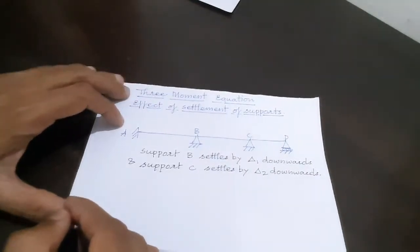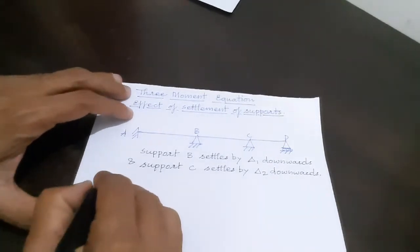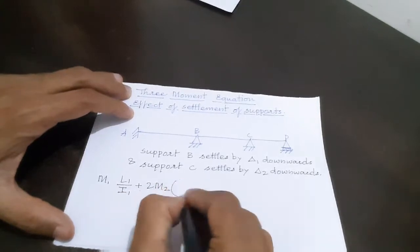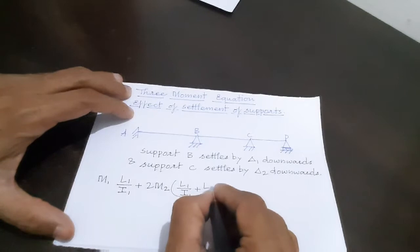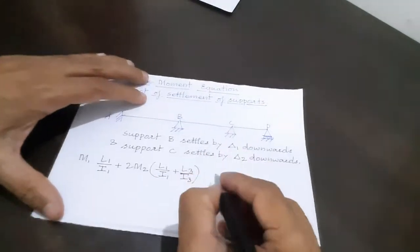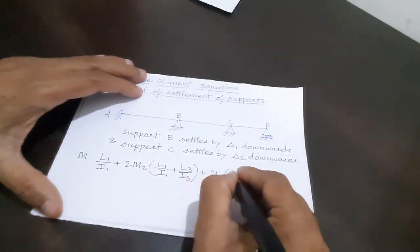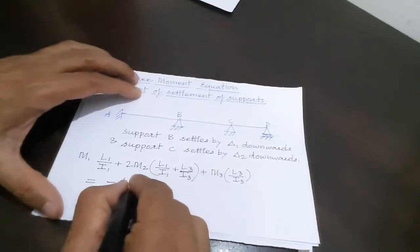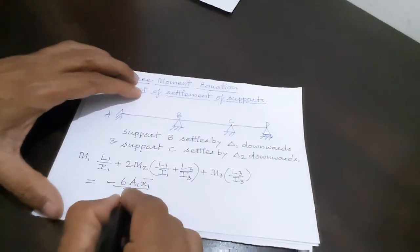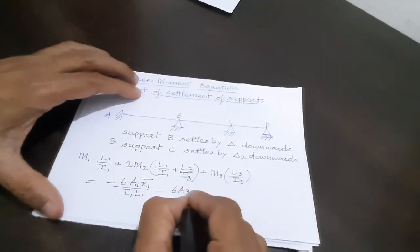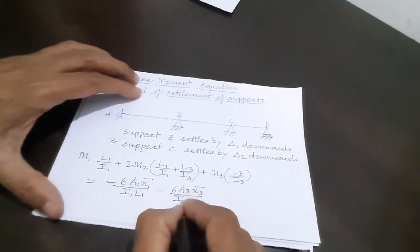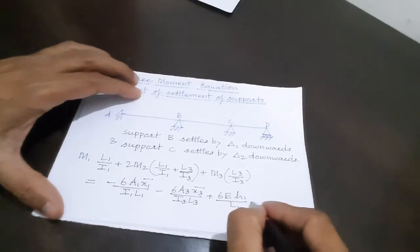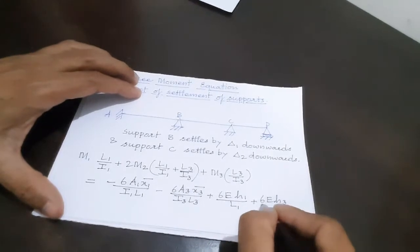The 3-moment equation gets modified — specifically, the right-hand side gets modified while the left-hand side remains the same: M1·L1/I1 + 2·M2·(L1/I1 + L3/I3) + M3·L3/I3 = −6A1·x̄1/(I1·L1) − 6A3·x̄3/(I3·L3) + 6E·H1/L1 + 6E·H3/L3.